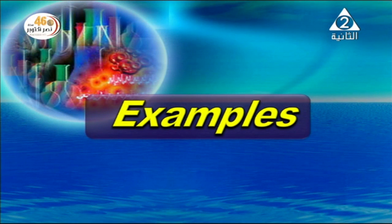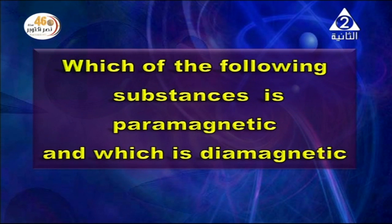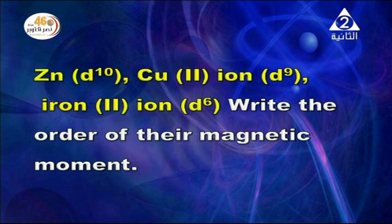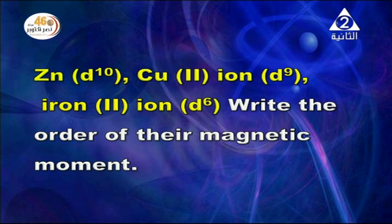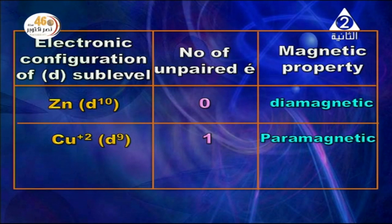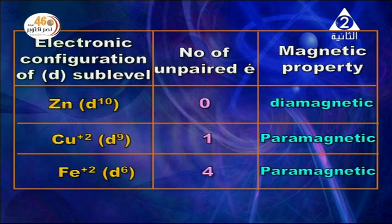Worked example: Which of the following substances is paramagnetic and which is diamagnetic — Zn2+ (D10), Cu2+ (D9), Fe2+ (D6)? Zinc (D10) has 0 unpaired electrons, so it is diamagnetic. Cu2+ has 9 electrons in the D sub-level with 1 unpaired electron, so it is paramagnetic. Fe2+ has D6 electrons with 4 unpaired electrons, so it is also paramagnetic.